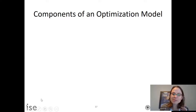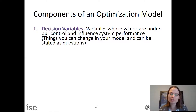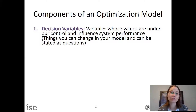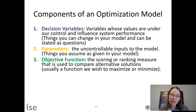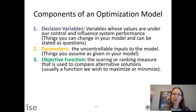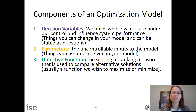You should understand the components of an optimization model. Decision variables are what you get to change — in aggregate planning, that's how much to produce each month, how much inventory at the end of each month, and what's our labor force. Parameters are the pieces of data in the model and influence what is optimal. The objective function tells you what is good or bad — usually maximizing profit or minimizing cost — and we set decision variables to maximize or minimize that function.